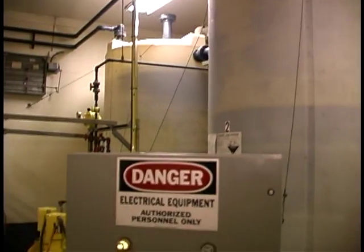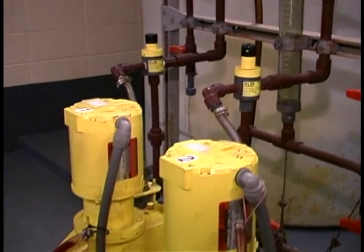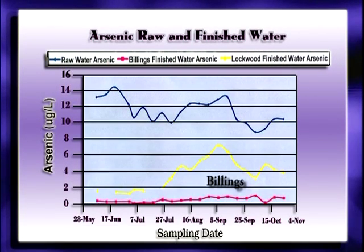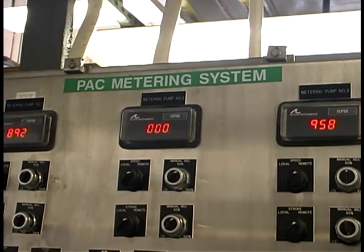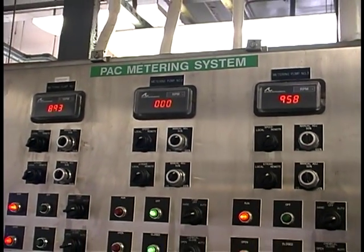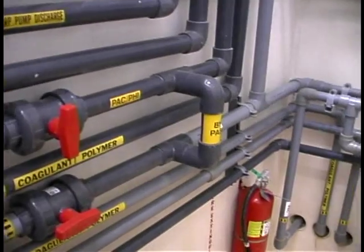The Lockwood Water District continued to use alum as a coagulant, providing an excellent full-scale comparison between aluminum and ferric-based coagulants. Lockwood treated with aluminum sulfate and polymers and typically achieved roughly 50% arsenic removal. As seen on the graph, Billings' finished water arsenic concentration was consistently below the detection level — less than 2 micrograms per liter — while alum at the Lockwood plant removed significantly less arsenic. Billings has since converted from ferric chloride to an aluminum polymer blend to reduce corrosion problems attributed to ferric chloride.